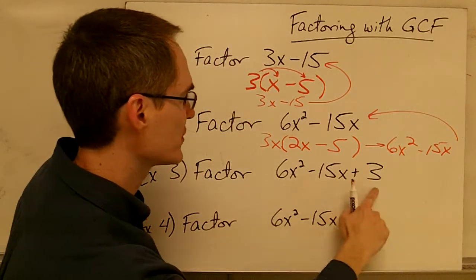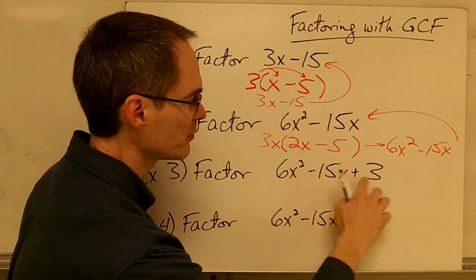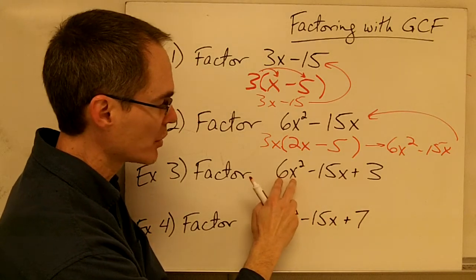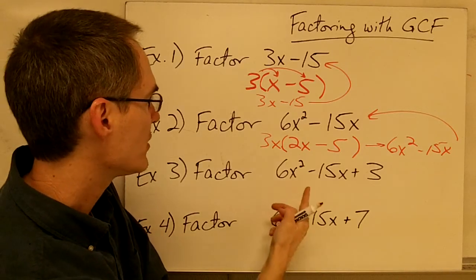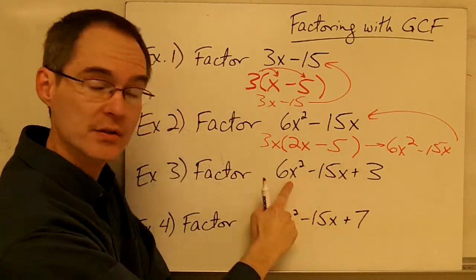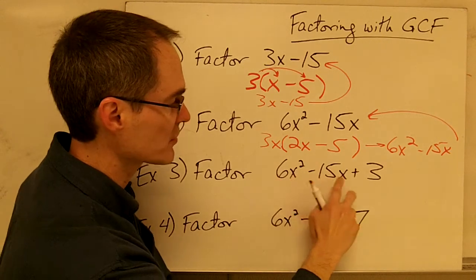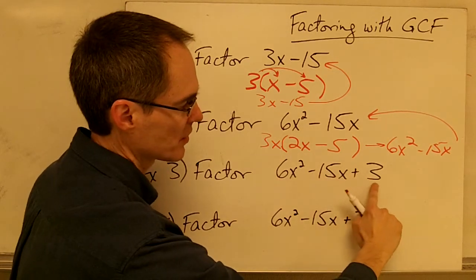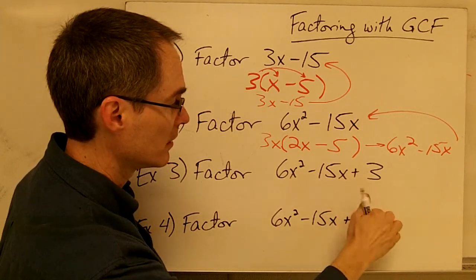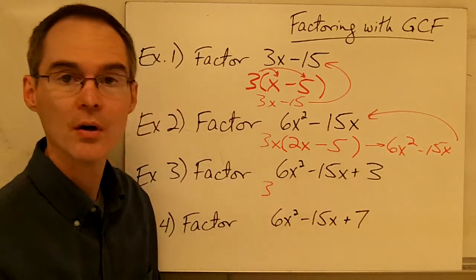Now sometimes you have expressions that have more than two terms — you could have any number of terms. When factoring expressions with multiple terms, you have to find a factor that will go into all of the terms. This expression looks similar to the previous one, so I might think I can pull out a 3x, but while 3x is a factor of the first term and the second term, it's not a factor of the third term because that term does not have an x in it. However, I notice that 3 will go into all three terms, so 3 is going to be my greatest common factor for this expression.